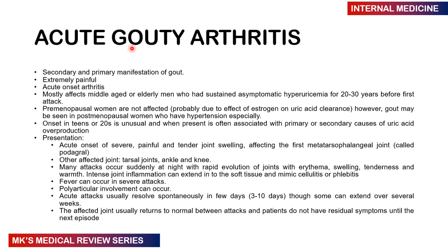The most commonly affected joints are the metatarsophalangeal joints — known as podagra-type gout. There is an acute onset of severe pain; the joint will be painful, tender, and swollen. It may affect other joints such as the tarsal joints, ankle, and knee. Many attacks happen suddenly at night and evolve quickly — the joint becomes red, swollen, tender, and warm. Intensive joint inflammation can extend into soft tissue, resembling cellulitis or phlebitis. Fever may occur with severe attacks. Polyarticular involvement can occur but gout is usually a cause of monoarticular arthritis.